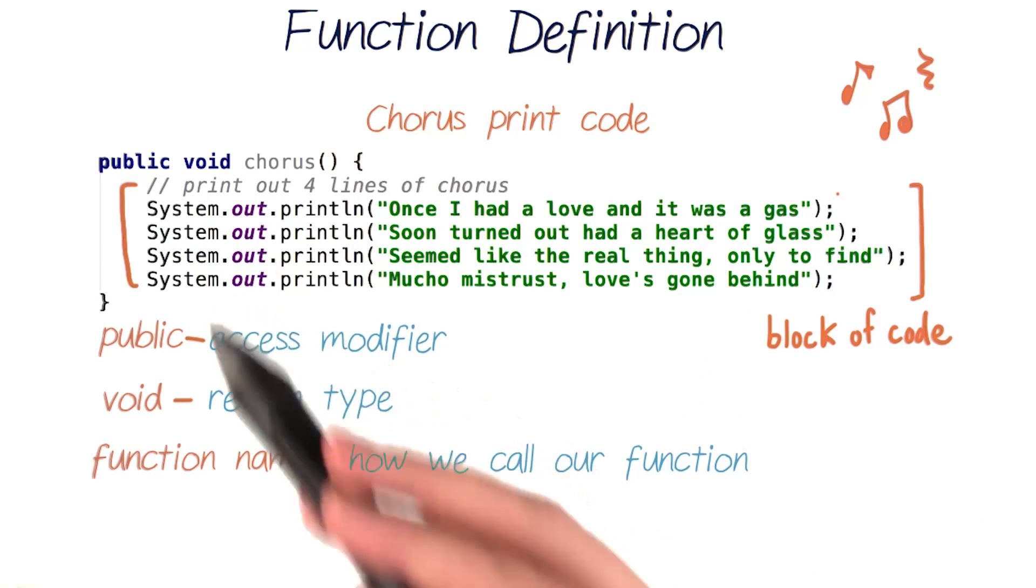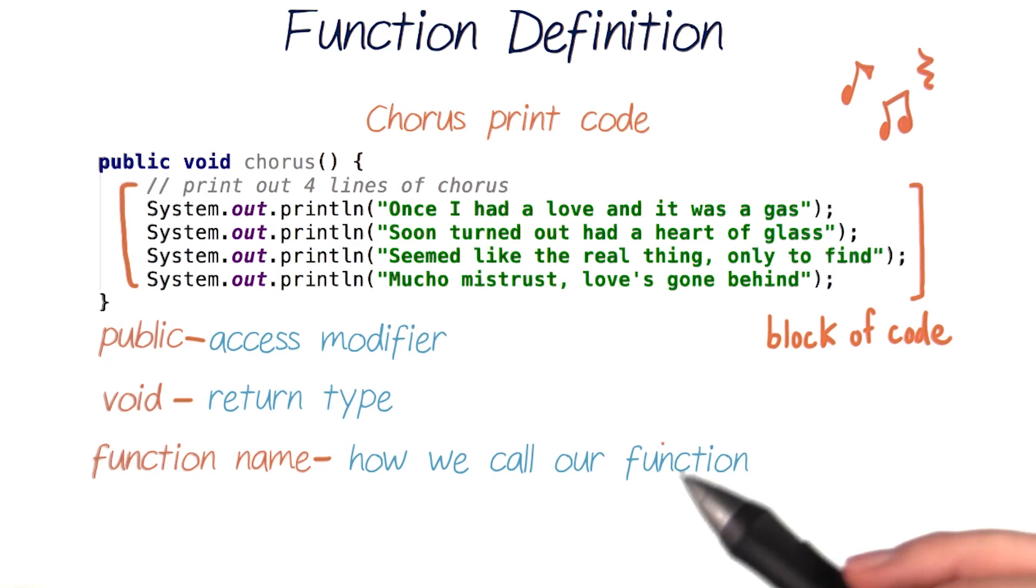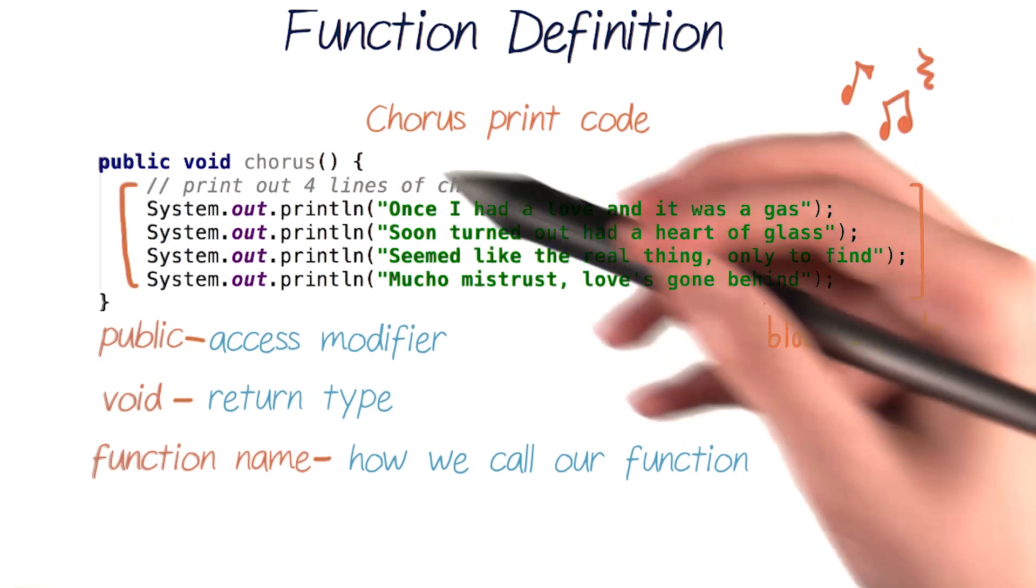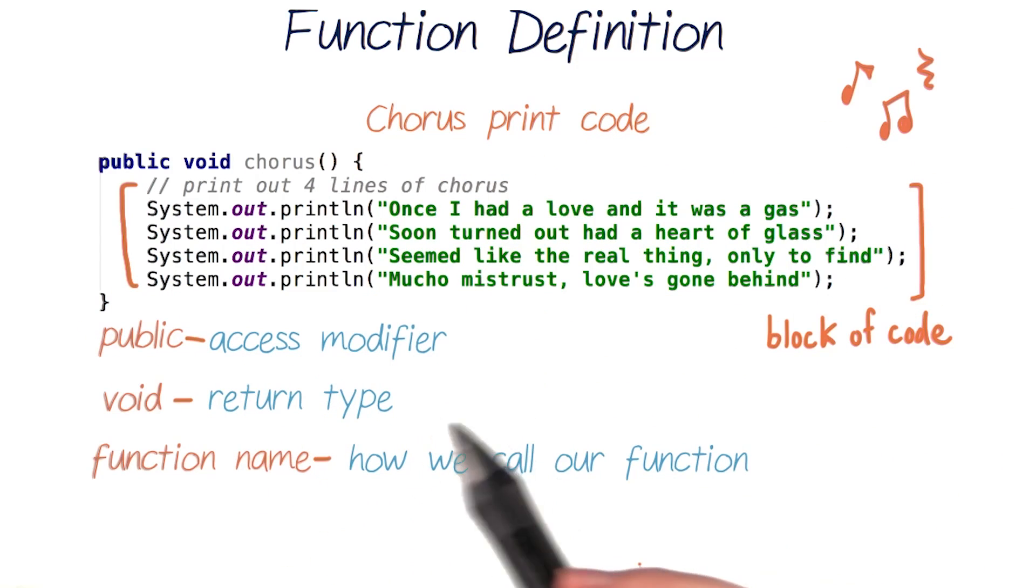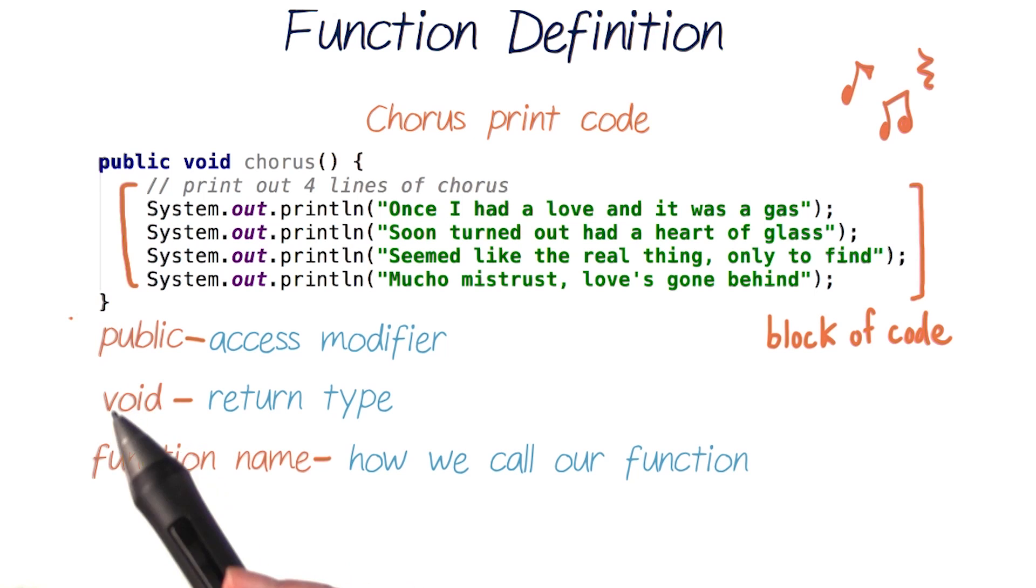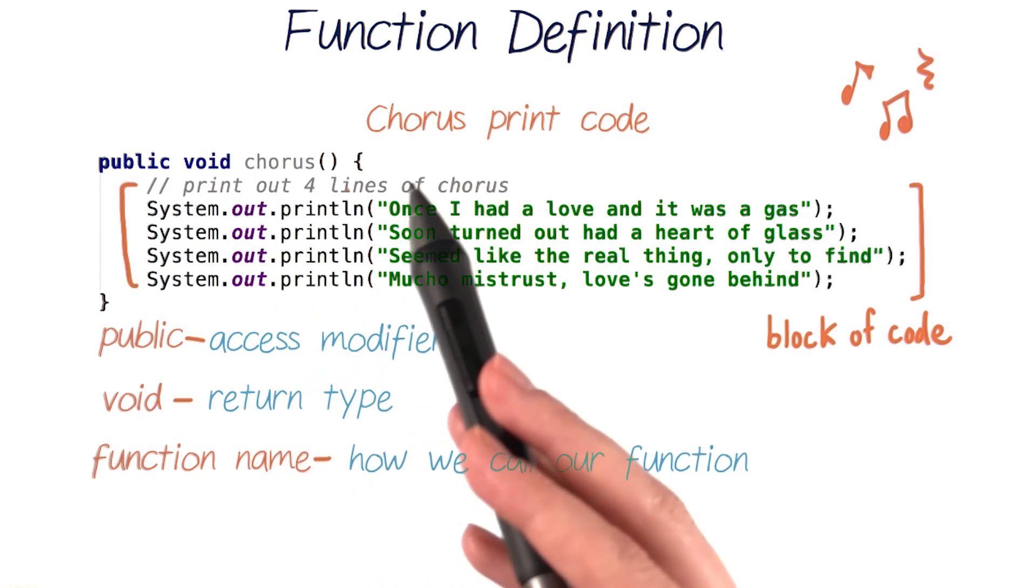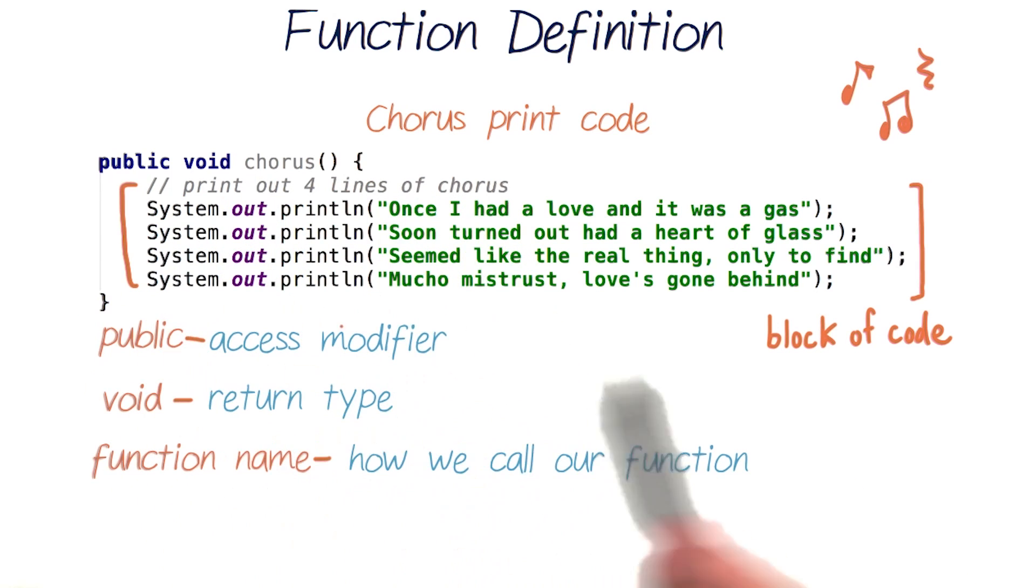And finally, we have the block of code that our function contains. It contains the printed lyrics code by surrounding it with curly braces. This is similar to how our if statements contain code inside braces. Now, every time this function chorus is called, this block of code will be executed.